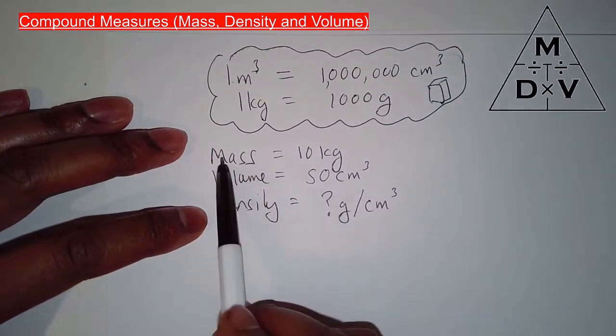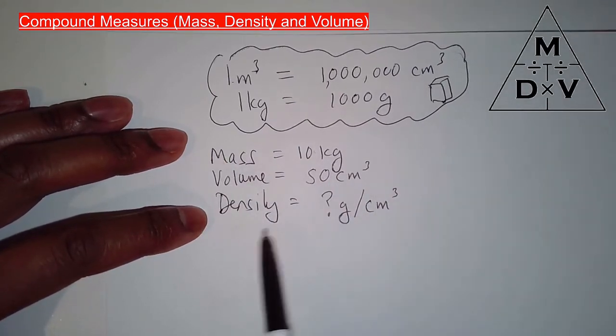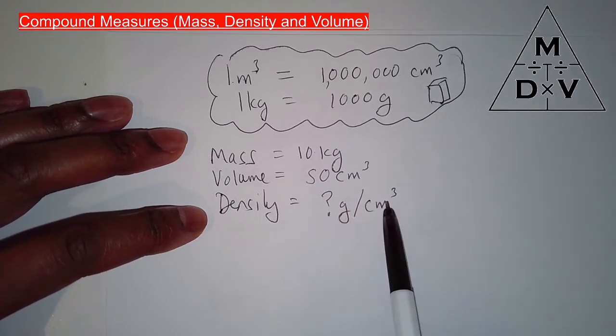Here's our problem now. Mass, 10 kilograms. So something has a mass of 10 kilograms. Its volume is 50 centimeter cubed. Need to work out its density in grams per centimeter cubed.